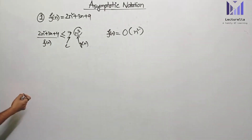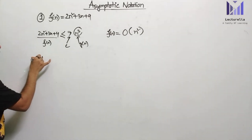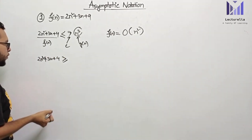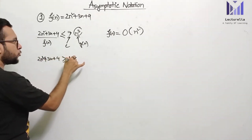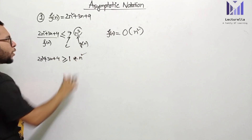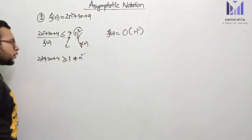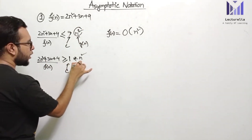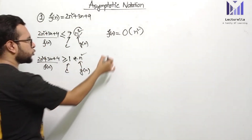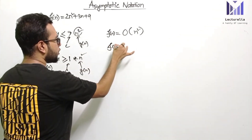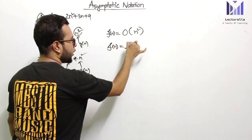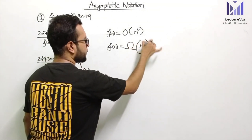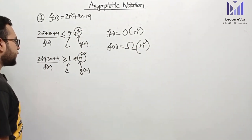Now going to the Big Omega notation — check out the condition: 2n² + 3n + 4 greater than or equal to something, say 1 into n². So f(n) satisfies c into g(n), and therefore f(n) is Big Omega of n².